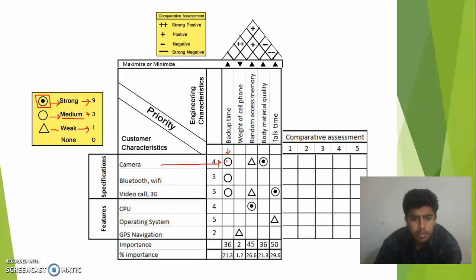Similarly bluetooth and wi-fi and backup has a score of 3. Camera and body material quality has a score of 9, and camera and random access memory has a score of 1. So I have performed all of this in the similar fashion.